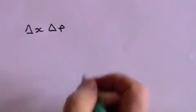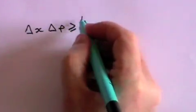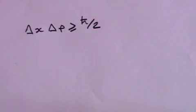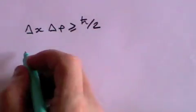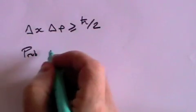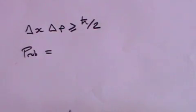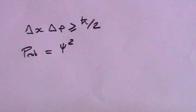This principle is often expressed as Δx Δp, which is the uncertainty in position multiplied by the uncertainty in momentum, is greater than or equal to ℏ over 2. A postulate of quantum mechanics, which is one we will come to shortly, says that the probability of finding the electron at any given point in space is equal to the square of the wave function at that point.